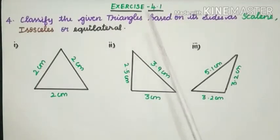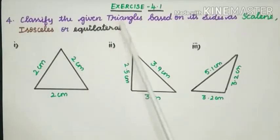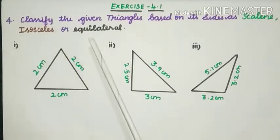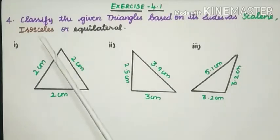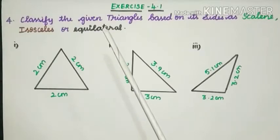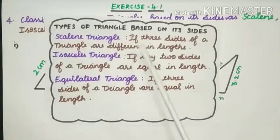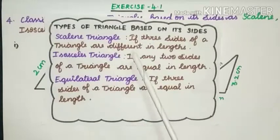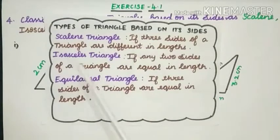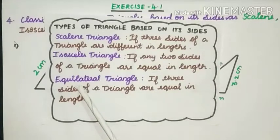Exercise 4.1, fourth sum: classify the given triangles based on its sides as Scalene, Isosceles or Equilateral. Let's recall: Scalene triangle means all three sides are different in length. Isosceles triangle means any two sides are equal in length. Equilateral triangle means all three sides are equal in length.